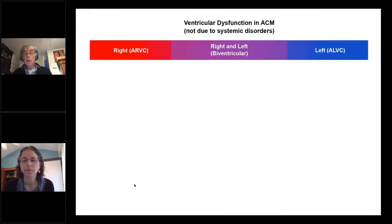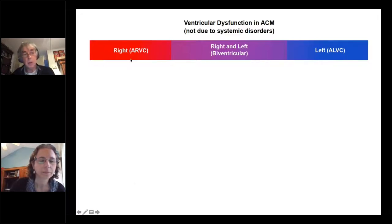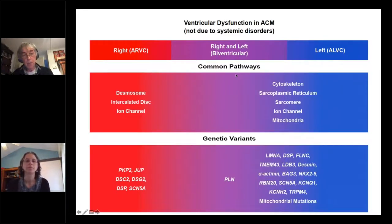The ventricular dysfunction in arrhythmogenic cardiomyopathy is either at the right side, and then it's arrhythmogenic right ventricular cardiomyopathy. It can also be at the left side, arrhythmogenic left ventricular cardiomyopathy, and it can also be in both, biventricular disease. The common pathways include the cellular structures, like the desmosomes, the intercalated disc, or ion channels.